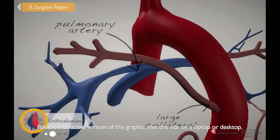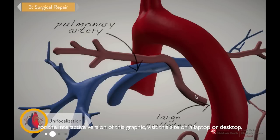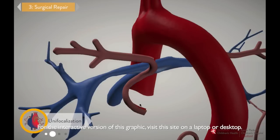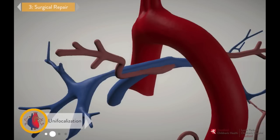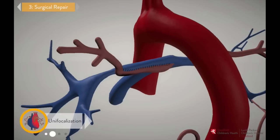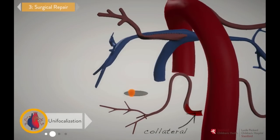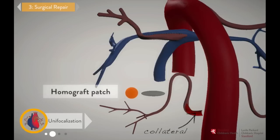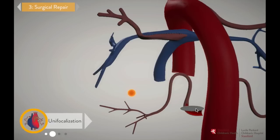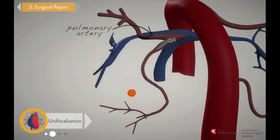Start by pulling one of the larger collaterals away from the aorta and attaching it to the blue-colored pulmonary artery above it. Sometimes the collaterals are a little small, so we make them bigger by sewing in some extra patch tissue. Grab one of the tissue patches and add it to the smaller collateral. Now attach the enlarged collateral to the pulmonary artery above.